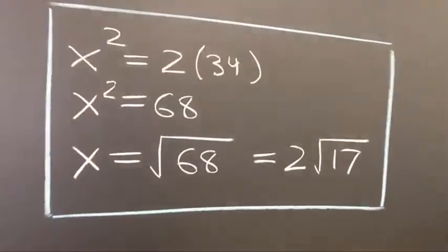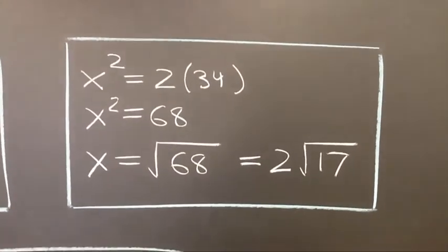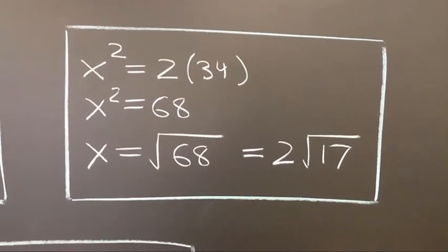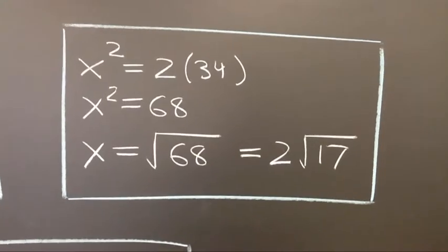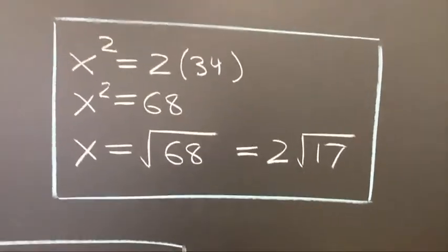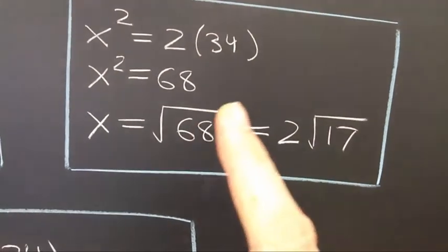And that means I write the equation, x squared equals 2 times 34. So x squared is 68. Take the positive square root, x is the square root of 68. And 68 is 4 times 17.